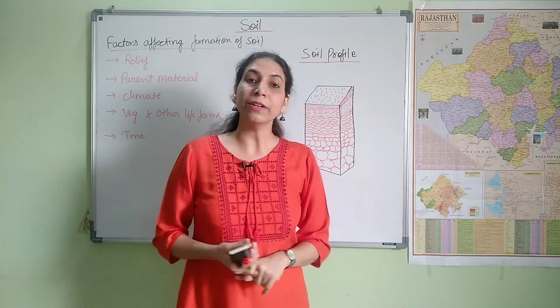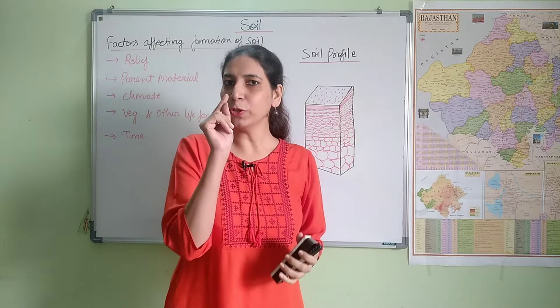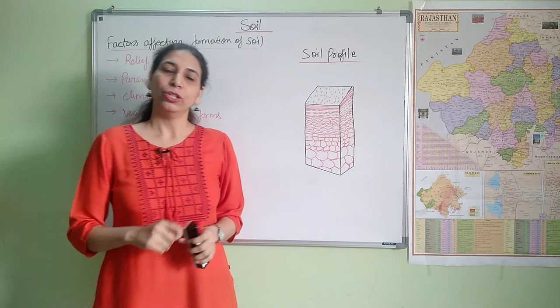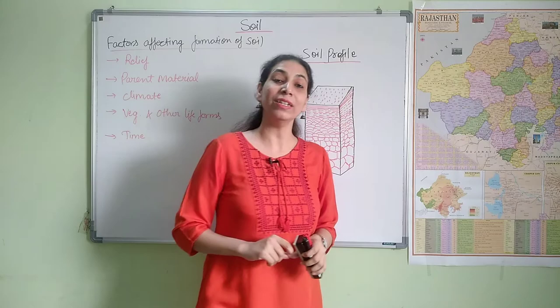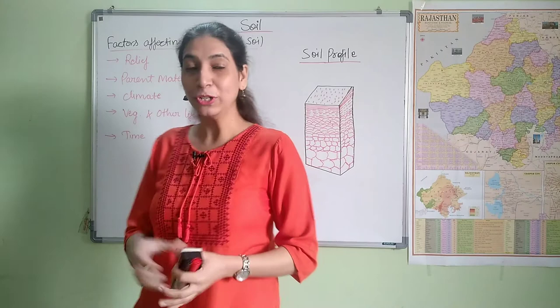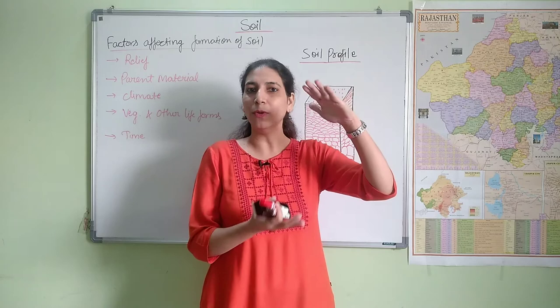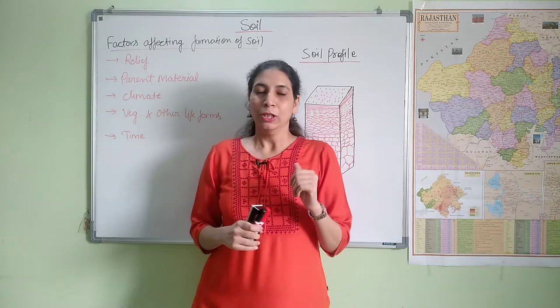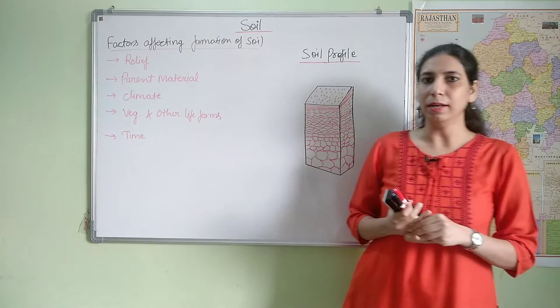The last factor is time, which is a very important and significant factor. Have you ever thought — how much time does it take to form just 1 inch of topsoil? It takes approximately 100 years to form just one inch of topsoil! So if you think about how many layers are below the topsoil, the whole well-developed soil profile takes an enormous amount of time. Soil formation is a very, very slow process.